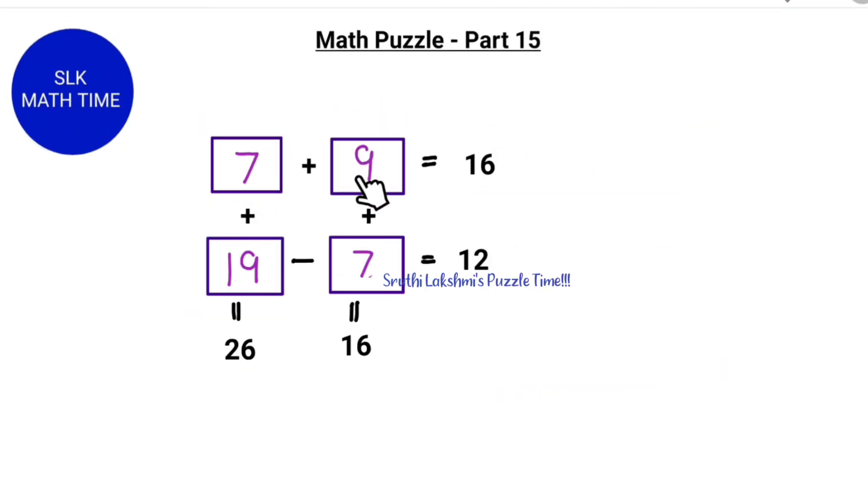So as you see if we do 7 plus 9 we get 16, 7 plus 19 is 26, 9 plus 7 is 16, and 19 minus 7 is 12. So this is the answer.